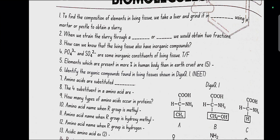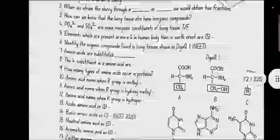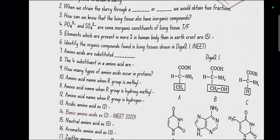How can we know that the living tissue also have inorganic compounds? By burning, the living tissue will oxidize all the carbon compounds and what will remain will be elements like calcium, iron, etc. PO4³⁻ and SO4²⁻ are some inorganic constituents of living tissue. Elements which are present in more percent in human body than in the earth's crust are: